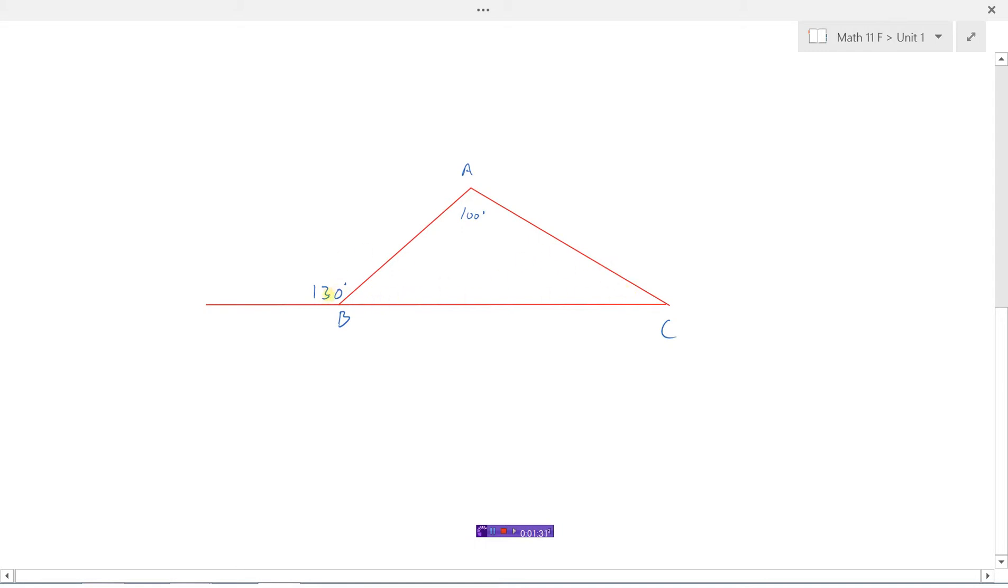But we do know that this angle here is 130, and we also know that angles along a line, so the angles between here and here, that's half a circle. So those two must add to 180. So because 180 minus 30 equals 50, then we know that this angle in the triangle must be 50 degrees, because those two must add to 180.